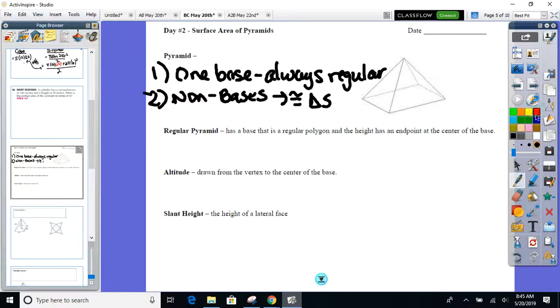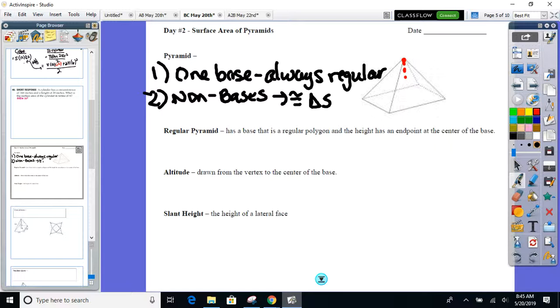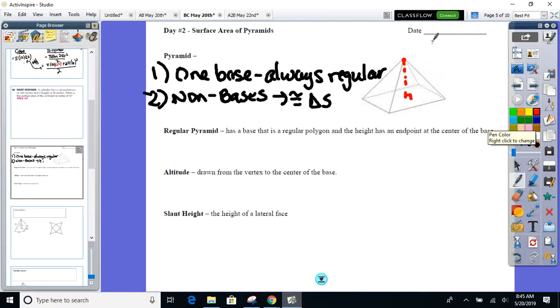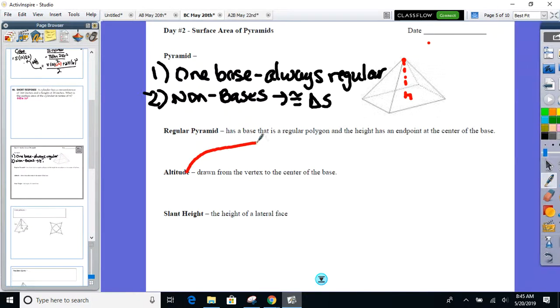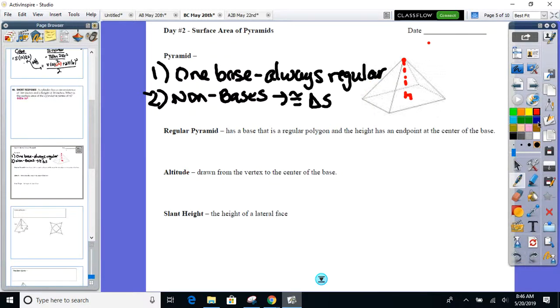So, on our diagram right here, from the apex straight down, that is your altitude, a.k.a. the Mission Impossible height. There's the altitude.